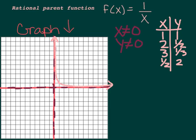Now if we were to graph the negatives — if I just stuck negatives in front of all my x's — 1 over negative 1 is negative 1, 1 over negative 2 is negative 1 half. So all the negative x's produce negative y's. It's just a reflection across the origin. What we end up with is what's called a hyperbola. It has two branches and two asymptotes.